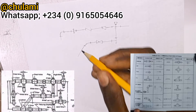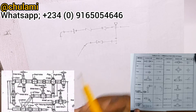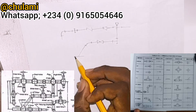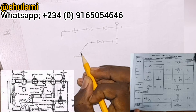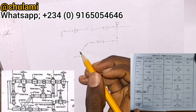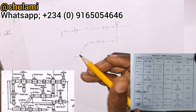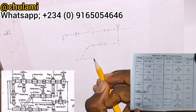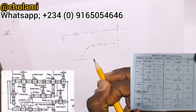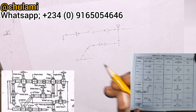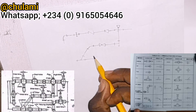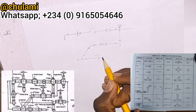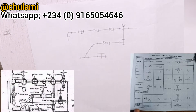Next you have a lateral — the symbol for a lateral is drawn something like this. Then we have a union joint, and the symbol for a union joint is drawn like this.